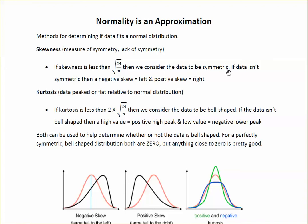If the data isn't symmetric — if skewness is not less than that threshold — then we look at the direction. A negative skew, or negative value, is skewed to the left, and a positive value would be a skew to the right.